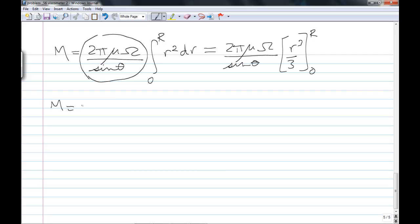And so M equals 2 pi mu omega over sin theta. You're going to have a 3 on the bottom and an R cubed on the top. Remember, we're after measuring viscosity by measuring this moment, so we can rearrange this and solve for dynamic viscosity.